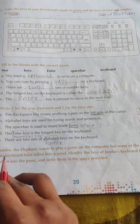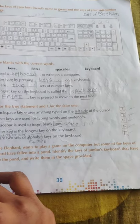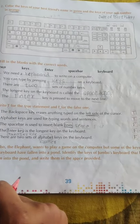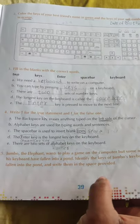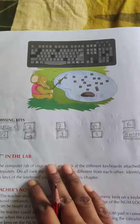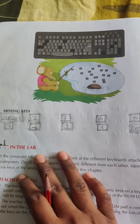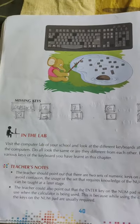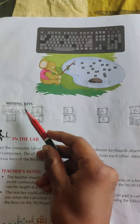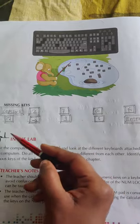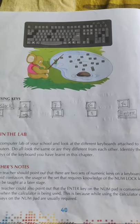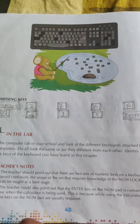Question 5: Jumbo the elephant wants to play a game on a computer, but some keys of his keyboard have fallen into the pond. Identify the missing keys. The missing keys are: Caps Lock, 2, 7, G, less-than symbol, Q, arrow key, 9, 5, and Enter key.